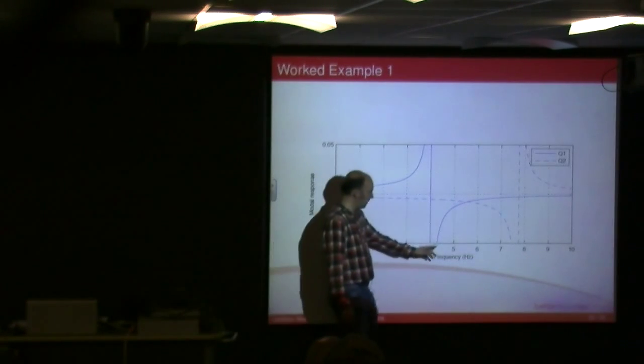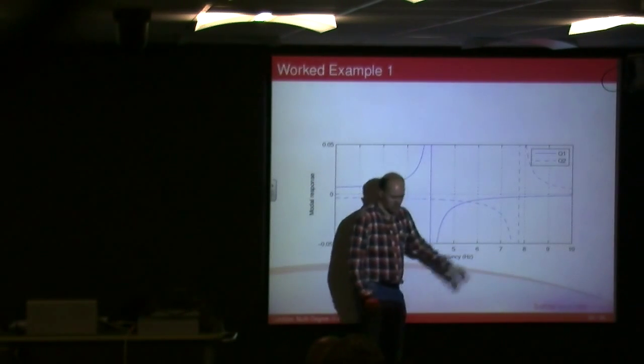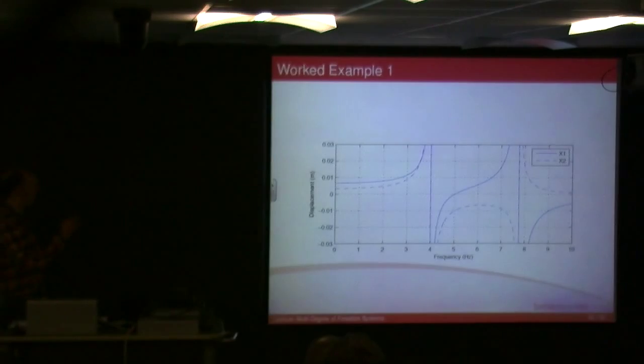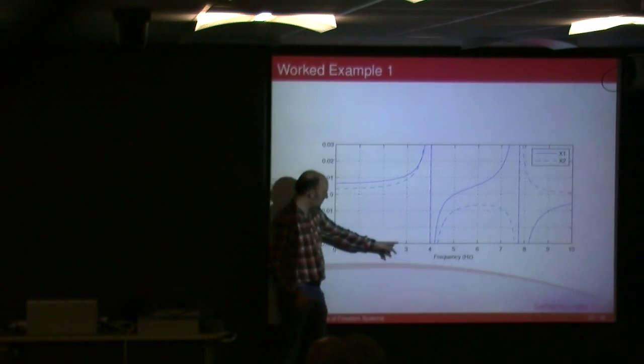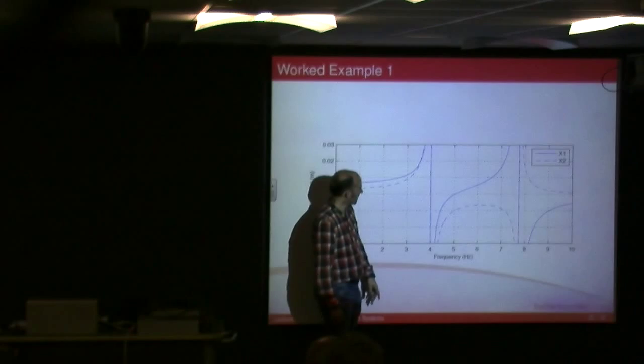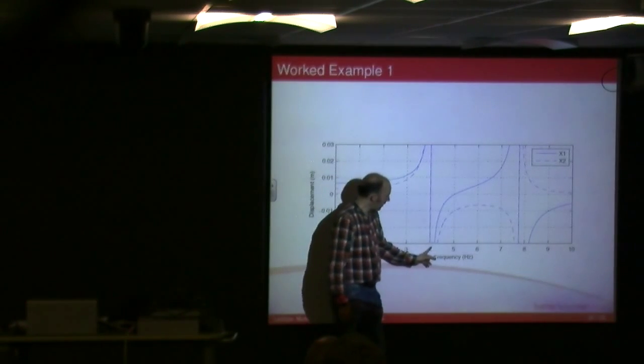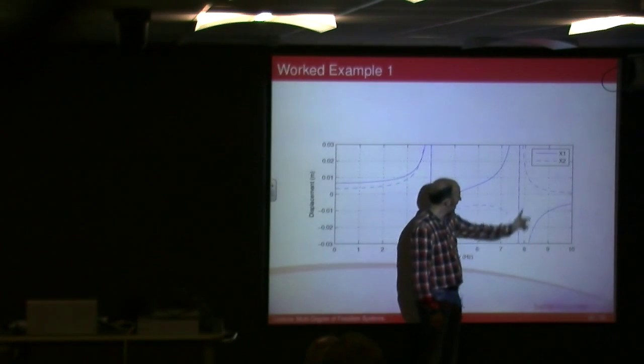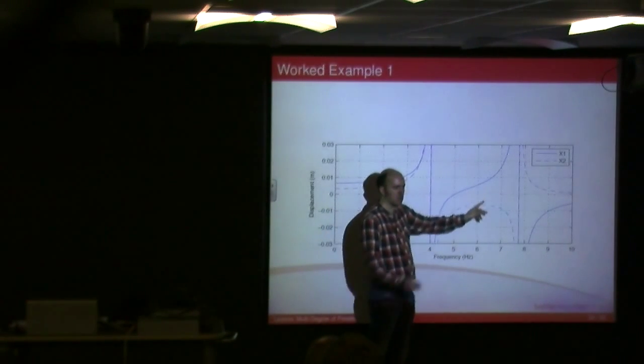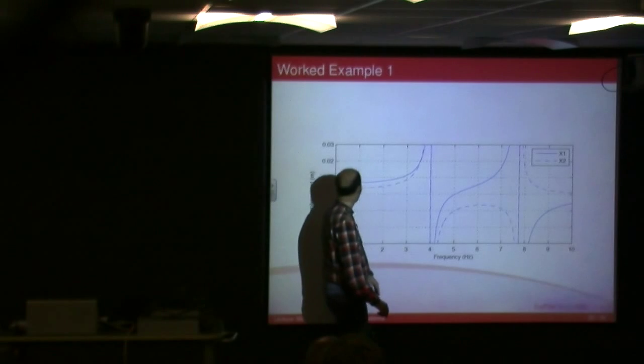Now what I can do is I can plot the same thing in terms of response in x, so the displacement. And you can see quite clearly that if, with no damping, if you excite the system at 4 hertz, we end up with them both going off to positive infinity. And then as you go up to 7.7 hertz, again, they both go off to infinity. And we were at 6 hertz, which is where our displacements were. So that's the amplitude of the displacement.